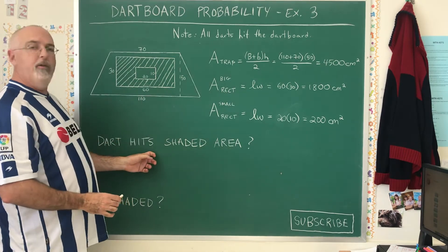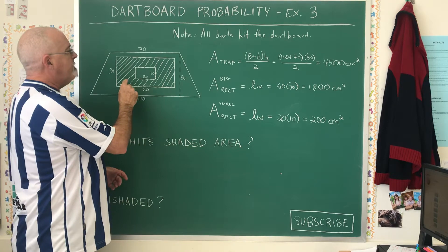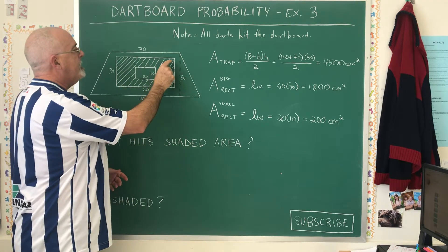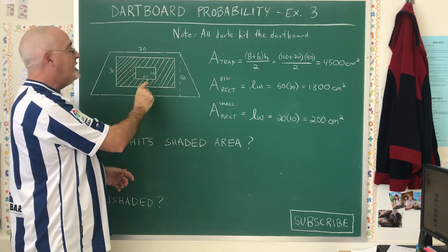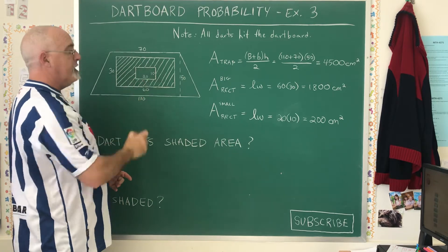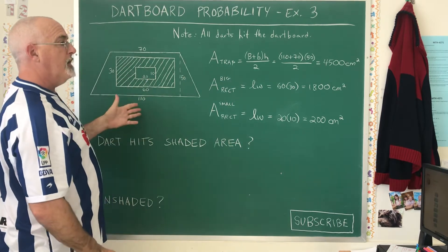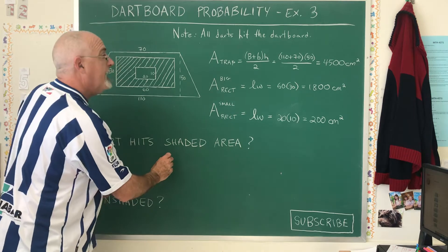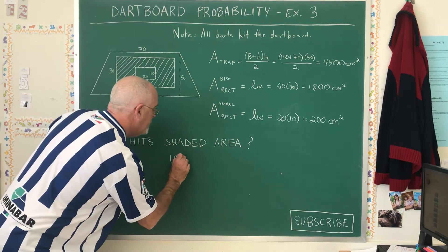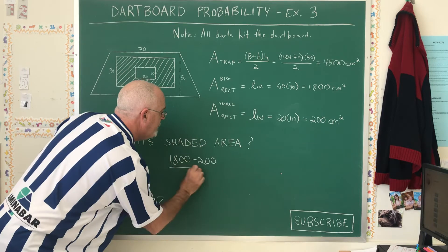The dart hitting the shaded area is going to be the area of the shaded larger rectangle minus the area of the smaller rectangle because the smaller one is not shaded. So we have 1800 minus 200 as our favorable.